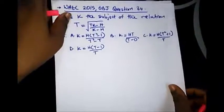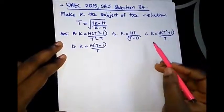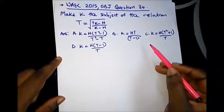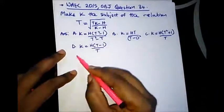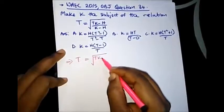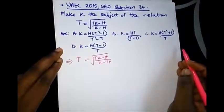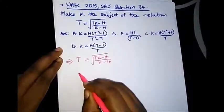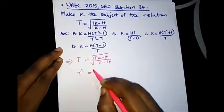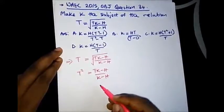The next question is from WAEC 2015 OBJ question 34. It says: make K the subject of the relation where T is equal to the square root of TK minus H over K minus H. The first thing we do here is to remove the square root. In removing the square root, we square both sides. So T squared is equal to — squaring both sides, this cancels off — we are left with TK minus H over K minus H.